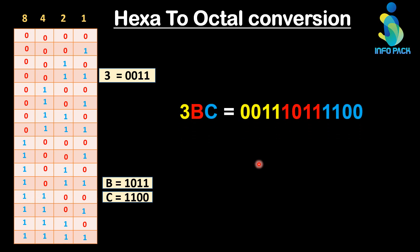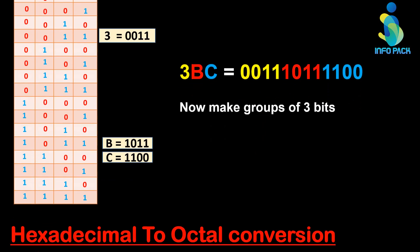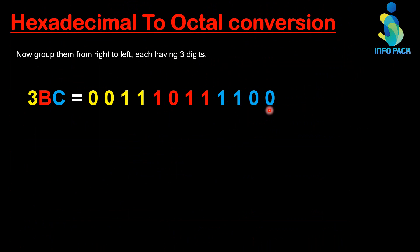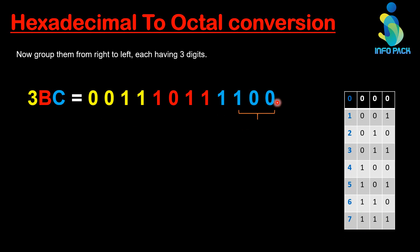Now combine all the binaries and make the groups of three bits. To make the group of three bits, you will follow the direction from right to left. So, our first group is 001 and it is equal to 1 in octal table.